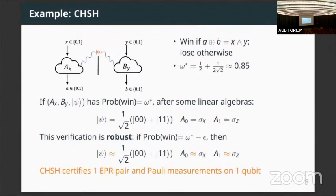This phenomenon is known as self-testing for quantum systems. This self-test is also robust in the sense that if you can only achieve a near-optimal winning probability, you can still claim that your state must be very close to an EPR pair and your measurement operators are essentially Pauli operators. The punchline is: during the CHSH game, if you observe that the two players win the game, you have high statistical confidence to claim that they do share an EPR pair and can perform commanded Pauli measurements. Of course, this CHSH only self-tests one EPR pair and the Pauli measurements are one qubit.